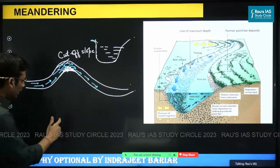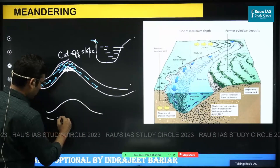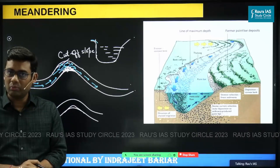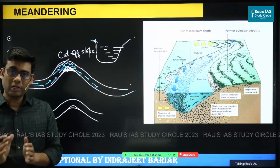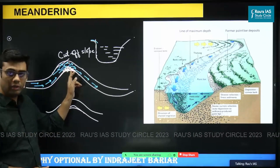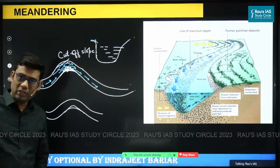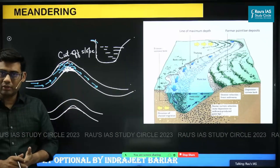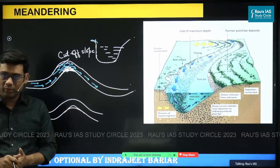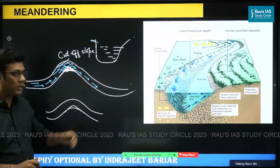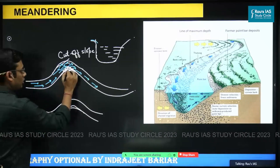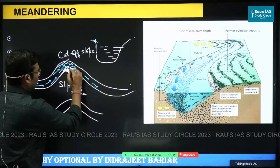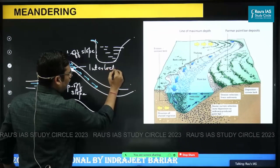Interlocking spurs — so in any meander, what you will find is a structure projecting into the river or the meander, called an interlocking spur. This is a depositional feature because the river is leaving the bank. So first of all it will have a very gentle slope. Comparing the concave and convex slopes, the concave slope would be steeper, which we are calling a cutoff slope, whereas on the convex side the slope would be very gentle. That gentle slope is called a slip-off slope. And this structure is called an interlocking spur.